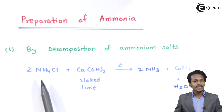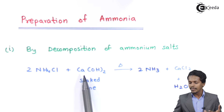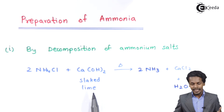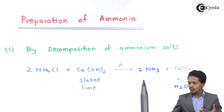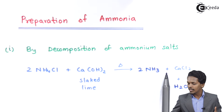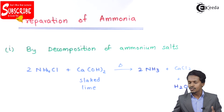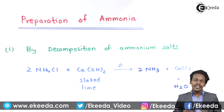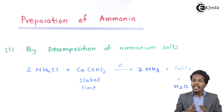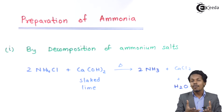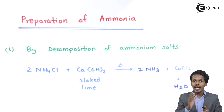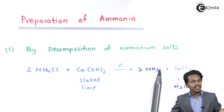For example, we have considered ammonium chloride. Suppose we react it with calcium hydroxide, which is also known as slaked lime. The reaction will occur at high temperature to obtain 2 moles of ammonia, NH3, along with CaCl2 and H2O. Now the thing is, we cannot use CaCl2 or H2SO4 as a dehydrating agent, because whenever CaCl2 or H2SO4 react with NH3, they will form a salt. Because of this complication, we do not use CaCl2 or H2SO4 as dehydrating agents.